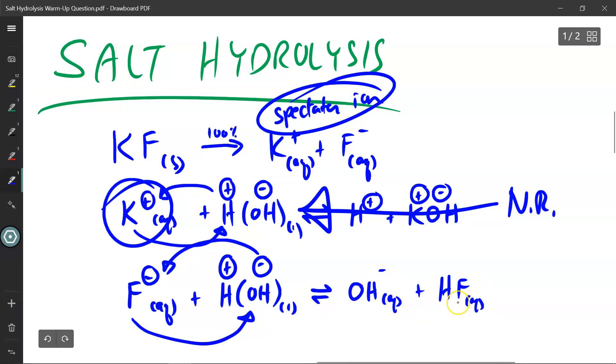Now HF, hydrofluoric acid, is a weak acid, meaning it is able to stick together in its molecular form. Very little of it actually breaks up. So if very little of it breaks up, you're going to have a lot of hydroxide ions floating around the solution, and that in turn makes my solution basic.